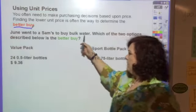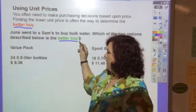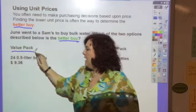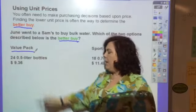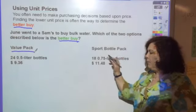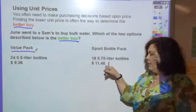June went to Sam's to buy bulk water. Which of the two options describes a better buy? We have a value pack—24 0.5-liter bottles for $9.36. You have bigger bottles: 18 of them in a sport bottle pack for $11.48.